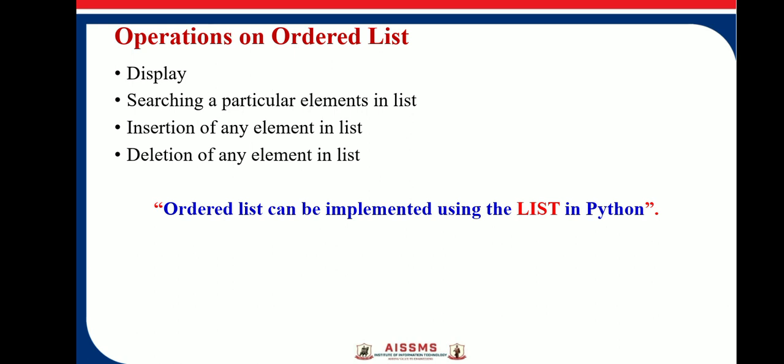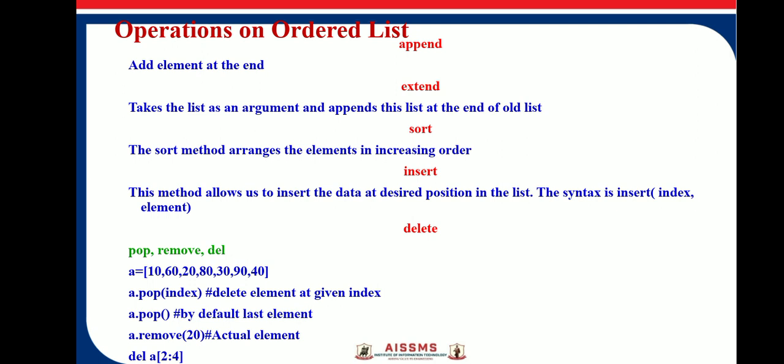Here are a few operations performed on a list in Python. The first one is called append. Append is nothing but adding an element at the end of a list. For example, consider list a equal to [10, 60, 20, 80, 30, 90, 40]. We can append an element into the list using the function a.append(element), which adds the element at the end of the list.